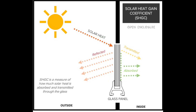Solar heat gain coefficient is the fraction of solar radiation admitted through a window, door, or skylight, either transmitted directly or absorbed and subsequently released as heat inside a building. The lower the SHGC, the less solar heat it transmits and the greater its shading ability. A product with a high SHGC rating is more effective at collecting solar heat during the winter. A product with a low SHGC rating is more effective at reducing cooling loads during the summer by blocking heat gain from the sun.